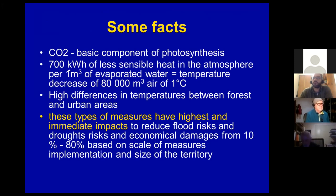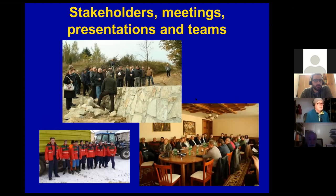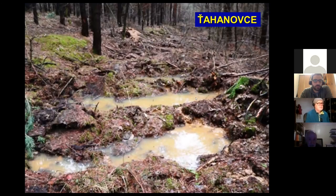We also calculated how much CO2 will be sequestered because you increase plant production, and how much sensible heat — real heat — is then stored in water vapor. Concerning one cubic meter of retained water, we can calculate how much we decrease the temperature.